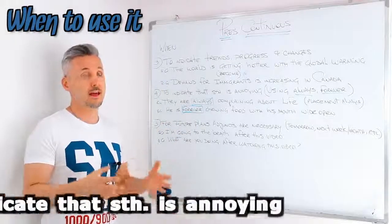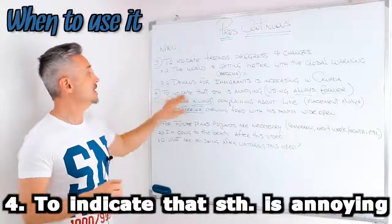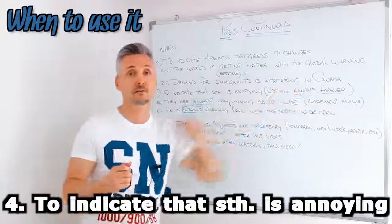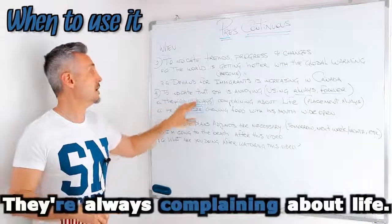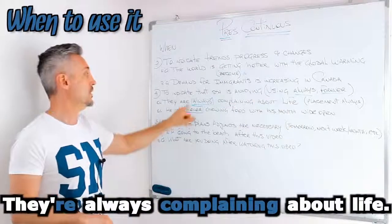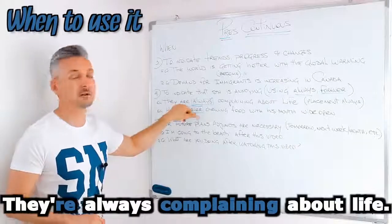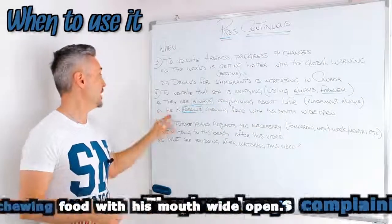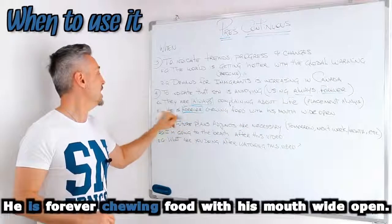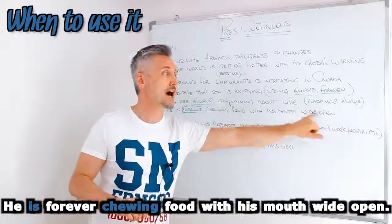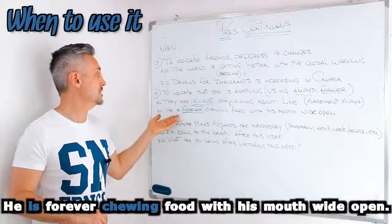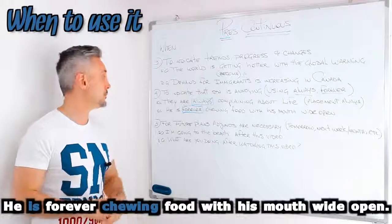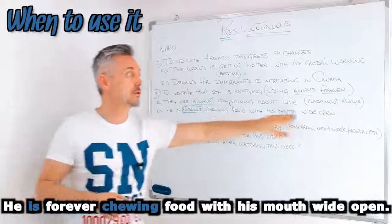The fourth point: we use the present continuous to indicate that something is annoying. Here you need to use an adjunct of time like 'always' or 'forever'. For example: they are always complaining about life. Look at 'always' — where is it placed? It's between the auxiliary and the main verb plus -ing, so 'complaining'. Another example: he is always chewing food — he is forever chewing food with his mouth wide open. 'Forever' is placed between the auxiliary and the main verb 'to chew', in this case 'chewing'.